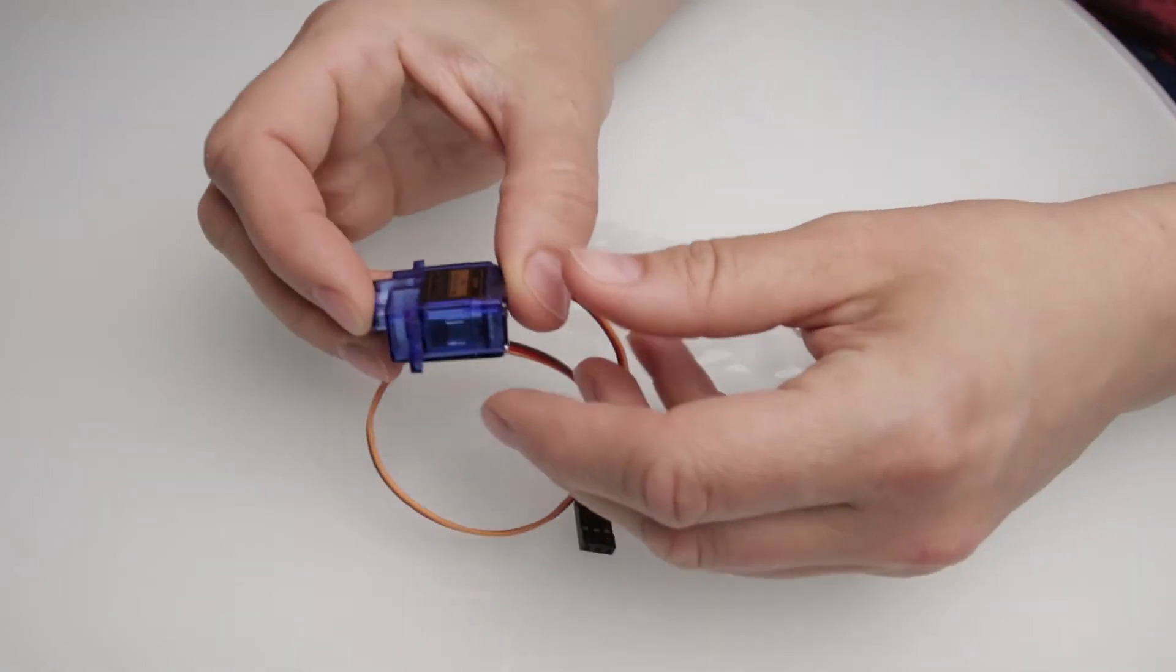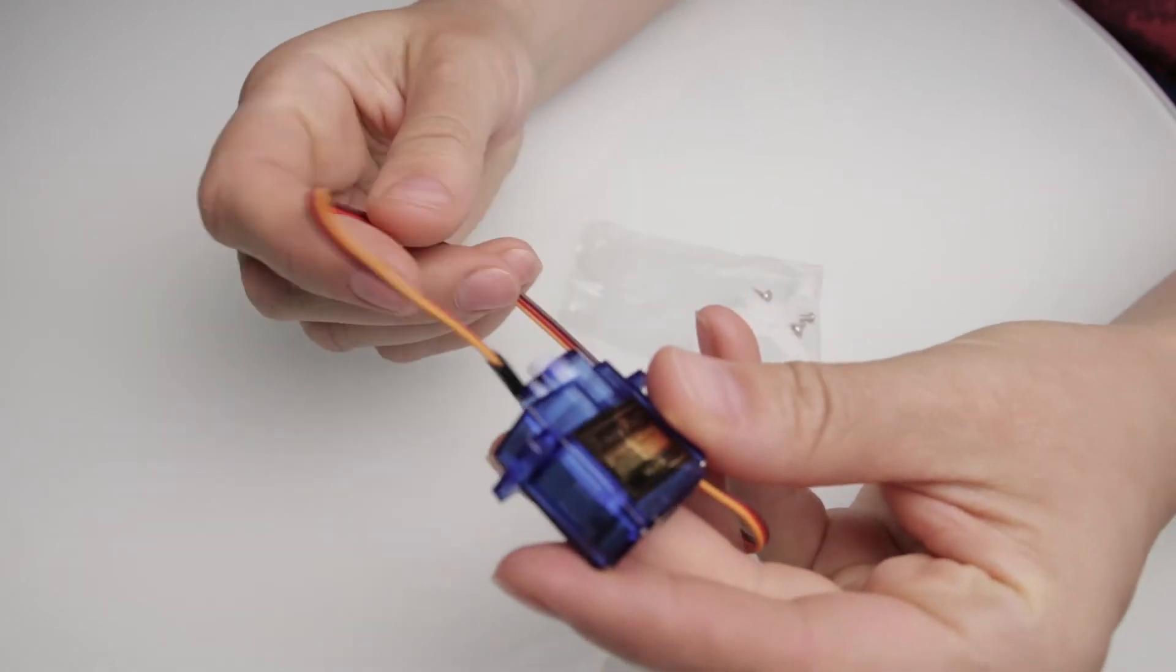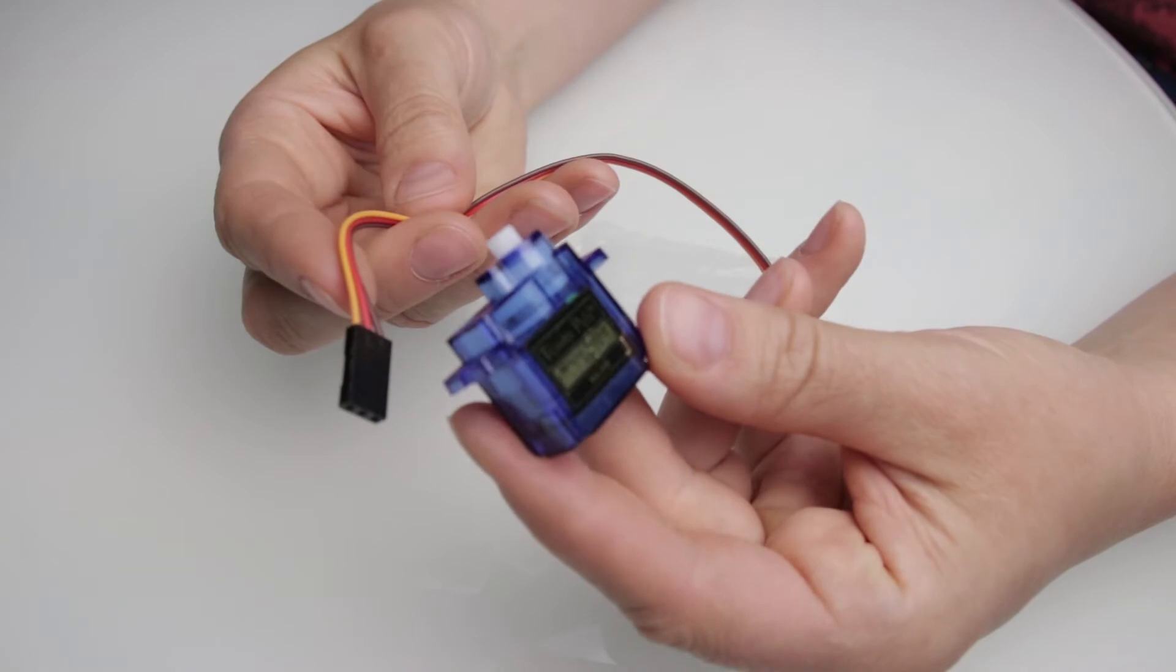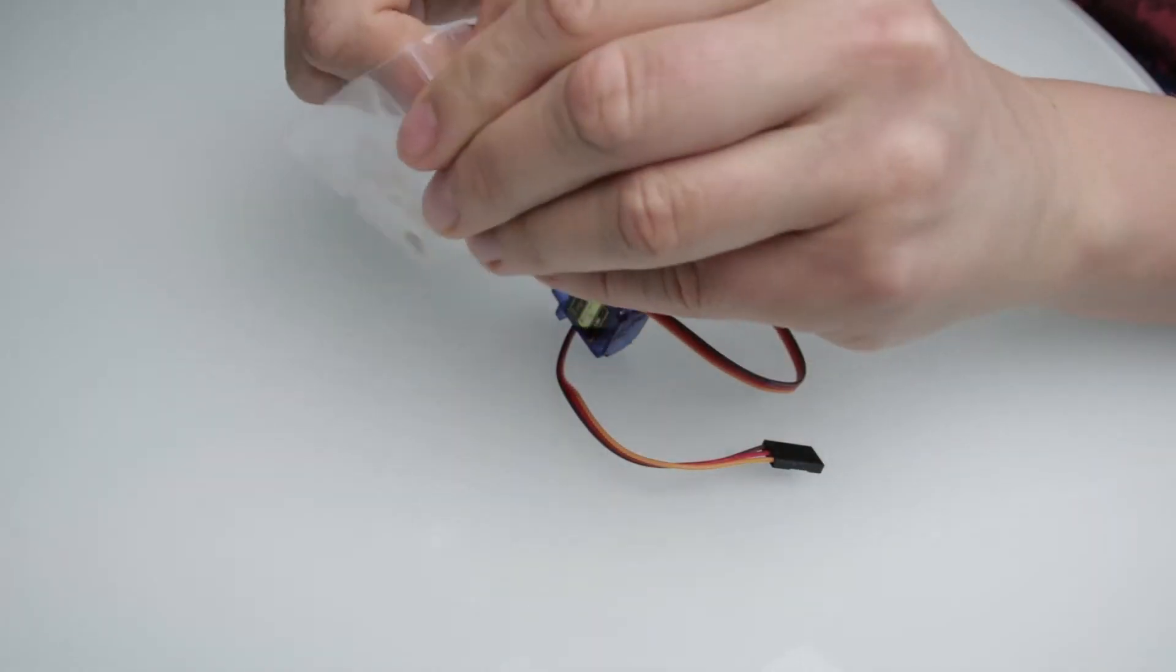Servo is a type of geared motor that can only rotate 180 degrees. This is a tiny and lightweight SG90. It comes with three arms and hardware.